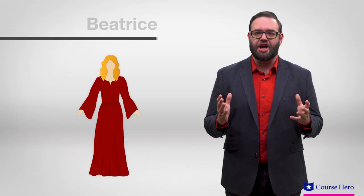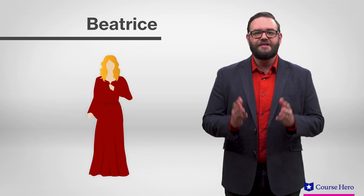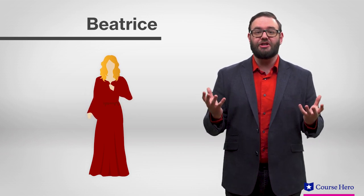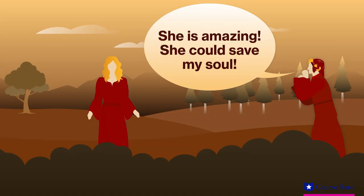The fictional Beatrice, a symbol of faith, hope, and charity, first appears near the beginning of Inferno. Dante only met the real Beatrice twice in his life, but he was so taken with her, she became his muse and appears in the poem as Dante's bridge to salvation.